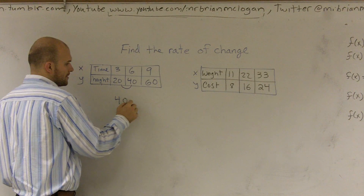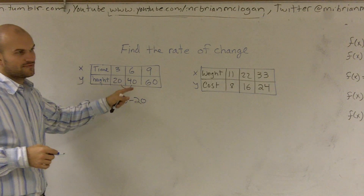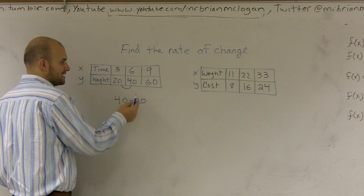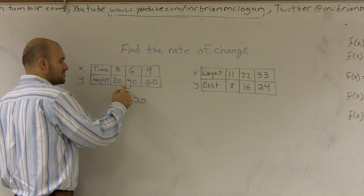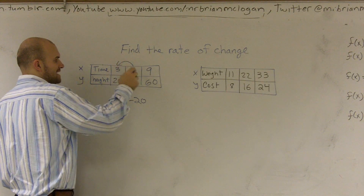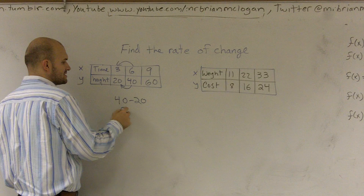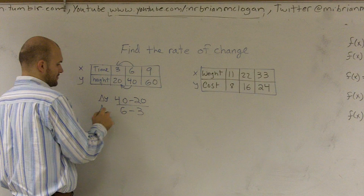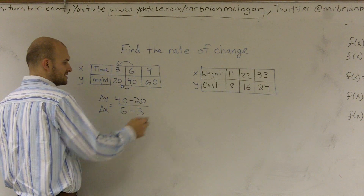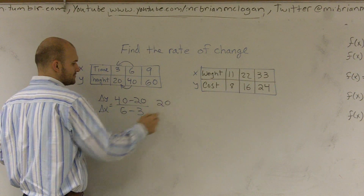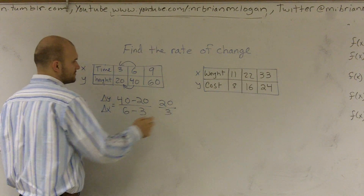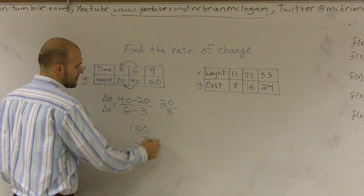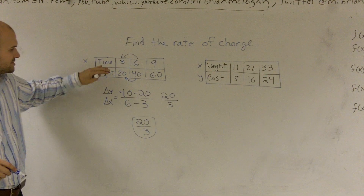So to find the change in these two quantities, I'm going to do 40 minus 20. You could do it the other way, but doing the larger minus the smaller, you'll usually avoid fractions or negatives. So 40 minus 20 on top, and you have to make sure you do it the same on the bottom: 6 minus 3. That's the change in y over my change in x. 40 minus 20 gives me 20, and 6 minus 3 gives me 3. So the rate of change for this function is 20 over 3.